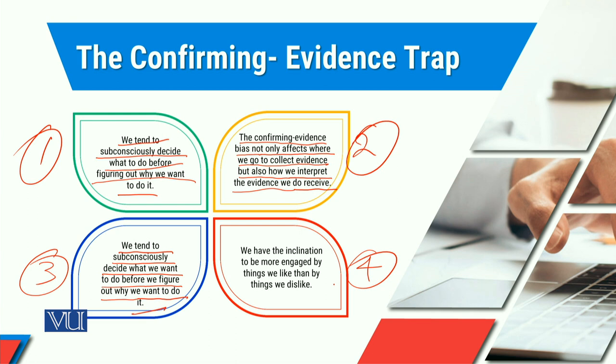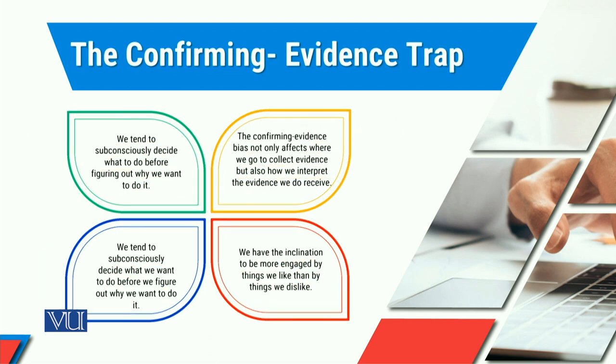The fourth trap, again related to unconscious and conscious mind processes, says that we have the inclination to be more engaged by things we like than by things we dislike. Here our selective perception comes into play — we selectively perceive and elaborate things. Therefore our selective perception, which is based upon our values, our beliefs, and our cognitive framework, affects all our decisions.